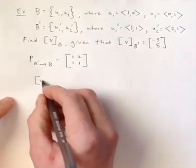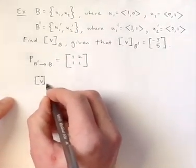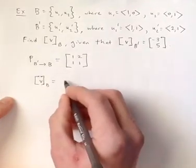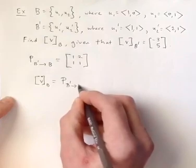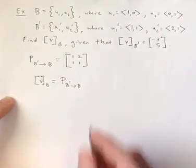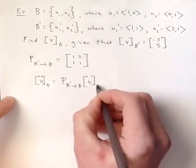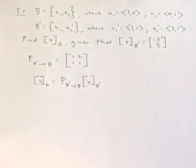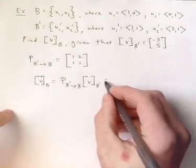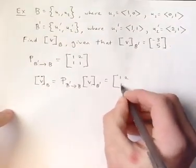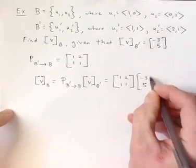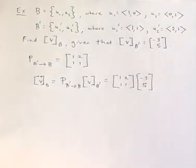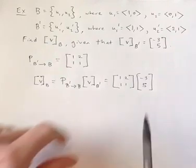So in other words, the coordinate vector for b ought to just be the transition matrix that changes b prime into b times v's coordinate vector relative to b prime. So at this point, I'm just going to plug in that matrix and this vector, this coordinate vector, and then I just need to multiply them.